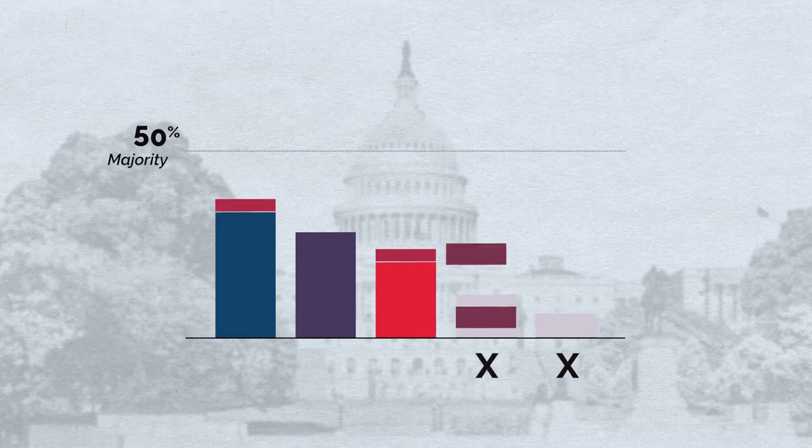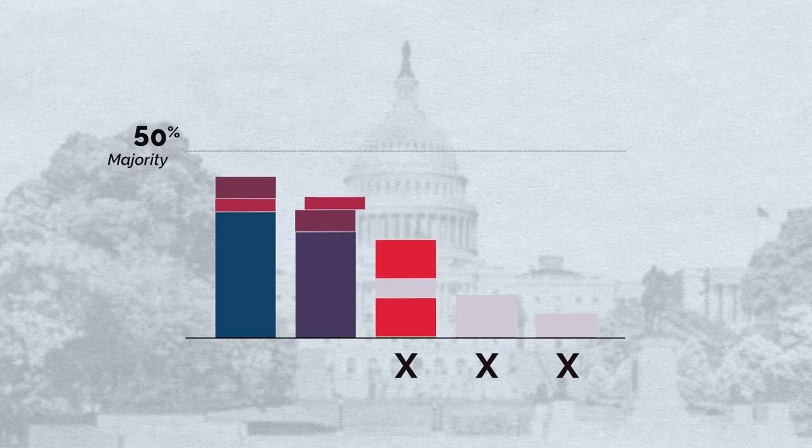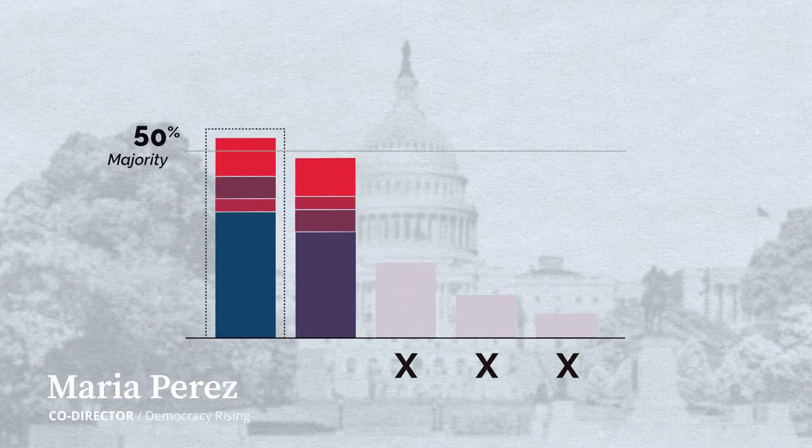When it comes to ranked choice, it's not just a matter of saying this person got five votes and this person got four, therefore this person won. It's a whole algorithm that needs to run where one person gets eliminated and their votes transfer to someone else, and there are lots of special rules.